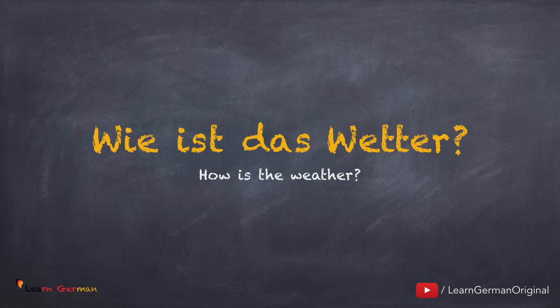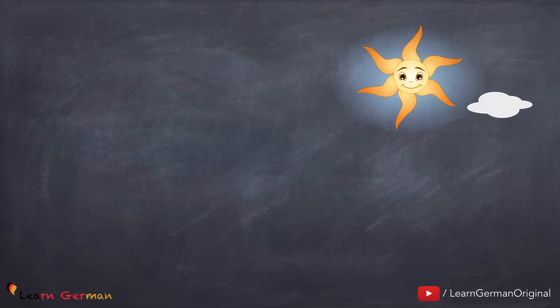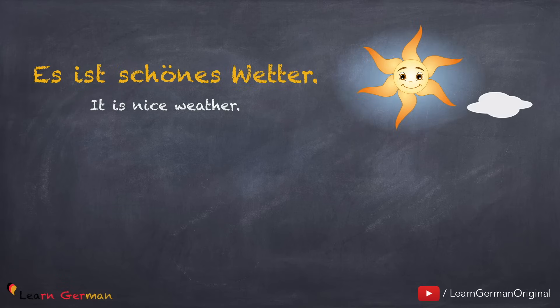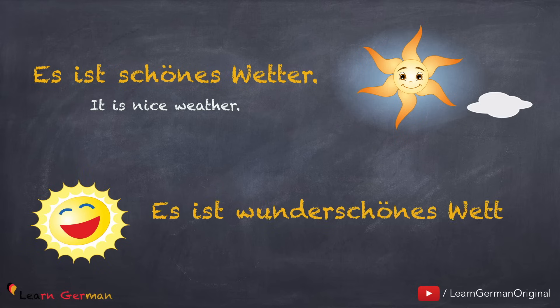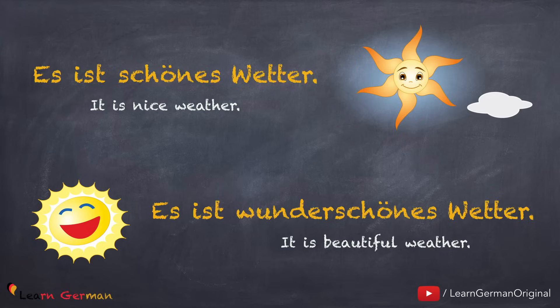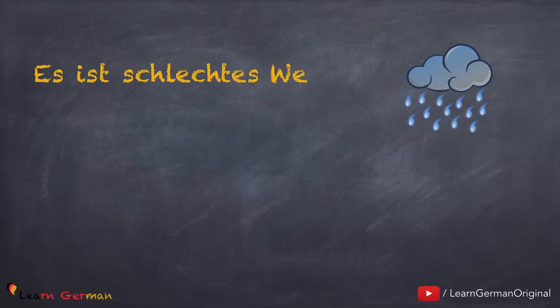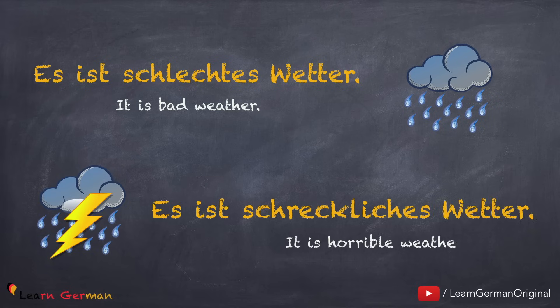The question can be answered in various ways depending on how the weather is. Let's go through a few examples. Es ist schönes Wetter. Es ist wunderschönes Wetter. In Germany, when the sun is shining it is considered good weather. There are some countries where a shining sun might not be considered good weather. Es ist schlechtes Wetter. Es ist schreckliches Wetter. Talking about weather is a very common topic of conversation in Germany.